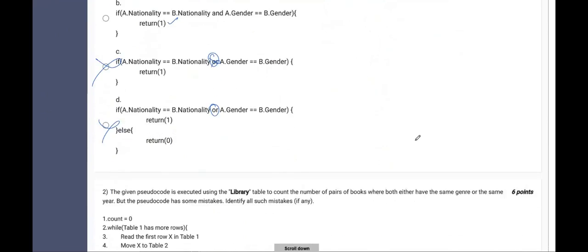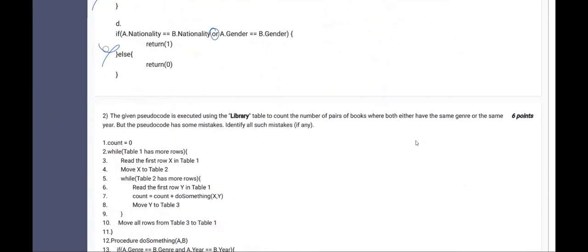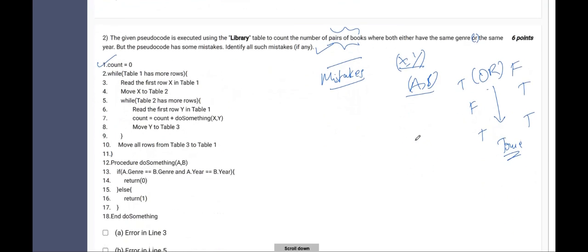Now going down to question number two. Identify the mistakes. This is a mistake recognition question. Number of pairs of books. Again, it is a pair of book. That means x will be compared with y, A will be compared with B like that. Which both either it is here it is mentioned to be either have the same gender. It is an or operator. That means anyone can be true. Either of them can be true. These are the possible combinations which will result in the final answer to be true.